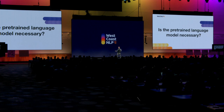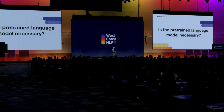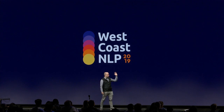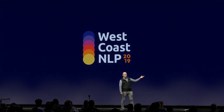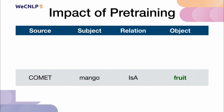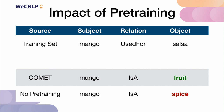The second question we wanted to ask is: is the pre-trained language model actually necessary? Could it just learn how to do this from knowledge graphs alone? I think we all know the answer is no. As a clear example, when we ask Comet what a mango is, it says 'a fruit.' But if I tell you that the only training set example for mangoes in our subset of ConceptNet was 'mango is used for salsa,' you might expect the model to produce something unrelated to fruits. And in fact that's what happened — it thinks mango is a spice. This shows the model is able to generalize the 'is a' relation using its information about mangoes learned from pre-training.